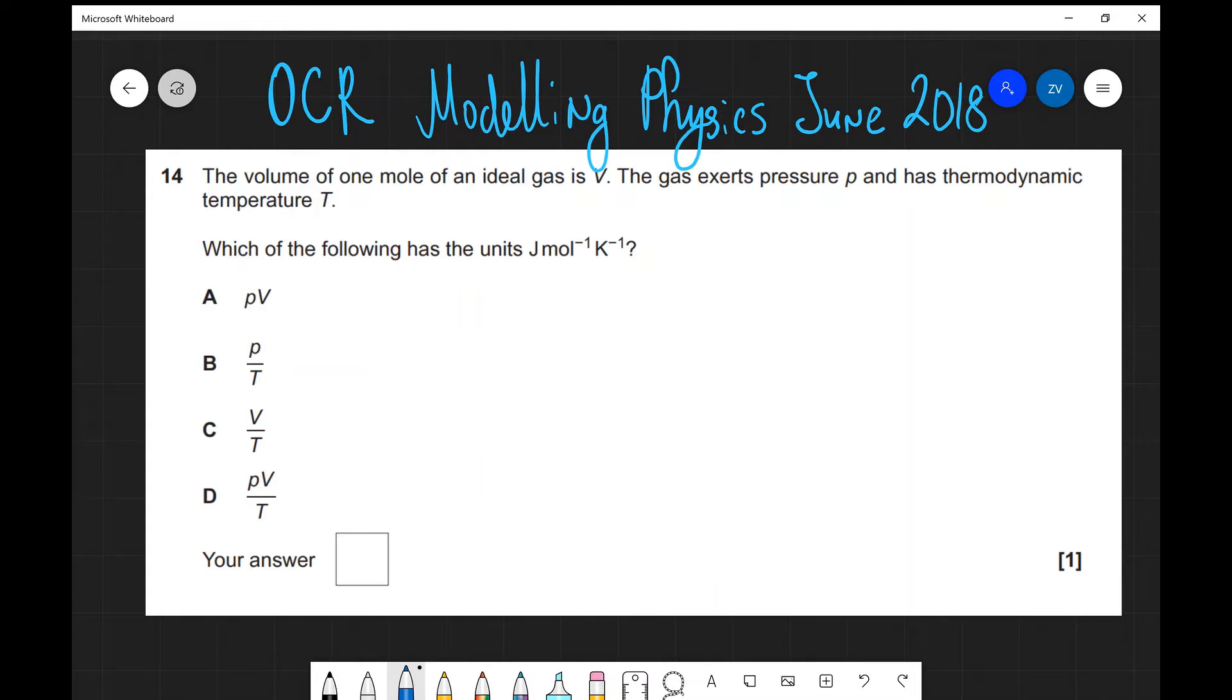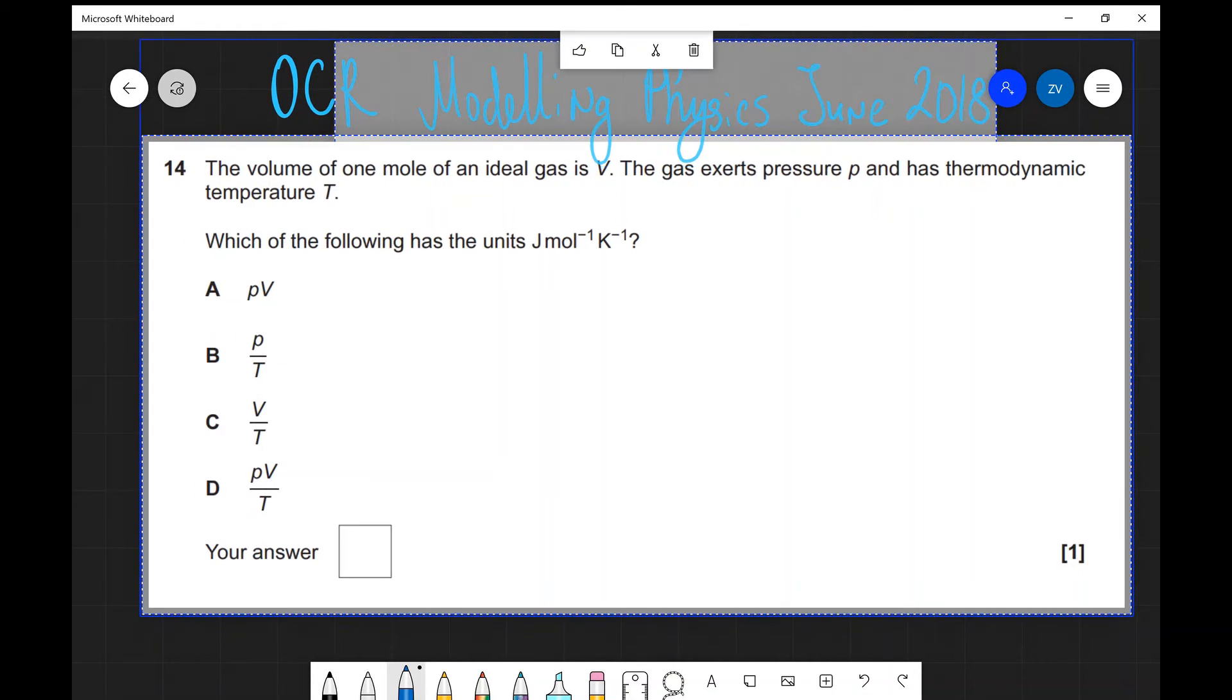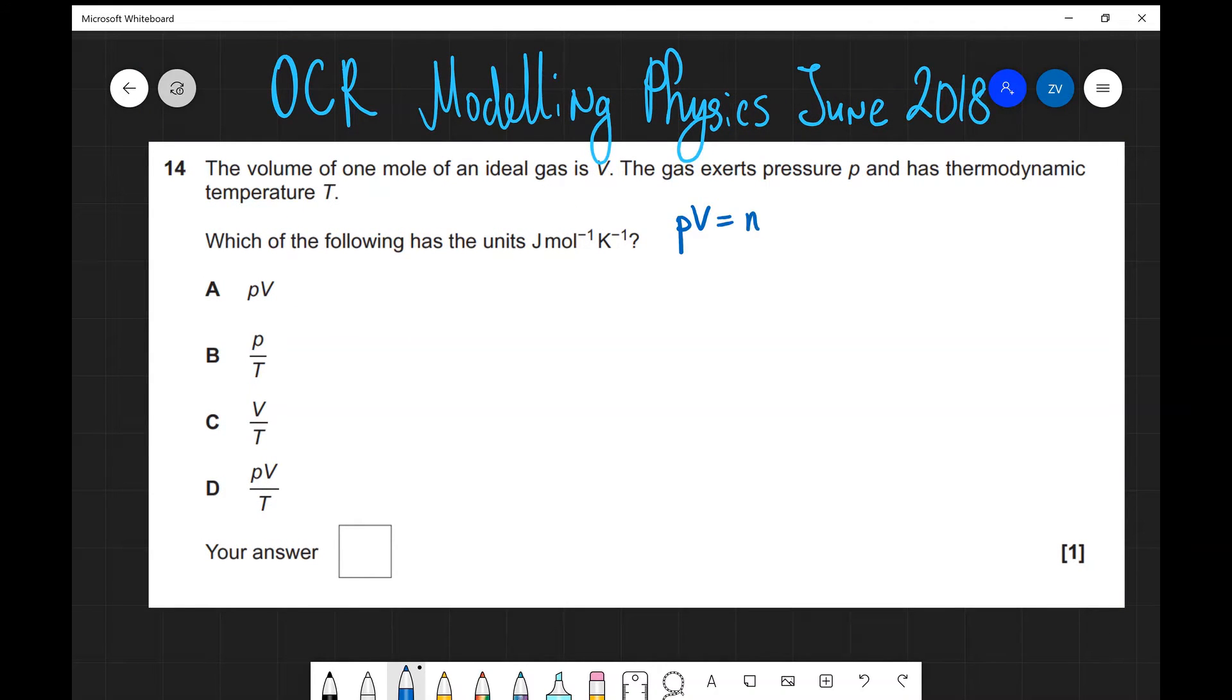Because we are talking about moles of an ideal gas, I'm going to use the equation PV equals nRT. The question says if I have a volume V, I'm actually dealing with one mole of an ideal gas. So the amount of moles, which is this n, is going to be equal to one. That turns my equation to PV equals RT.